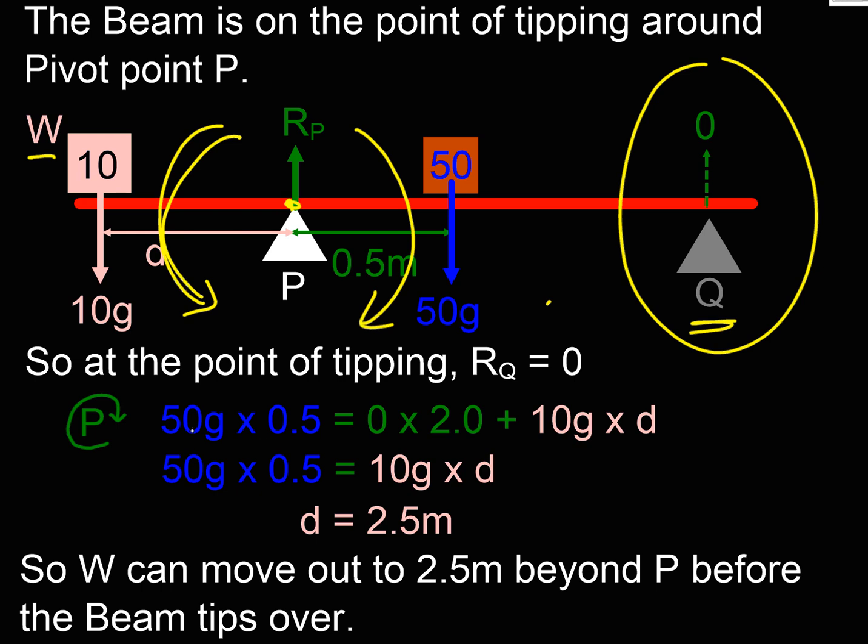So what we're ending up with, if we just did our moments around there, is our weight moment, the blue moment. The reaction force moment has gone to zero, and we've got this moment and the pink moment. So they must be balanced if everything's neat and tidy. And therefore, our distance we can go out is 2.5 metres.